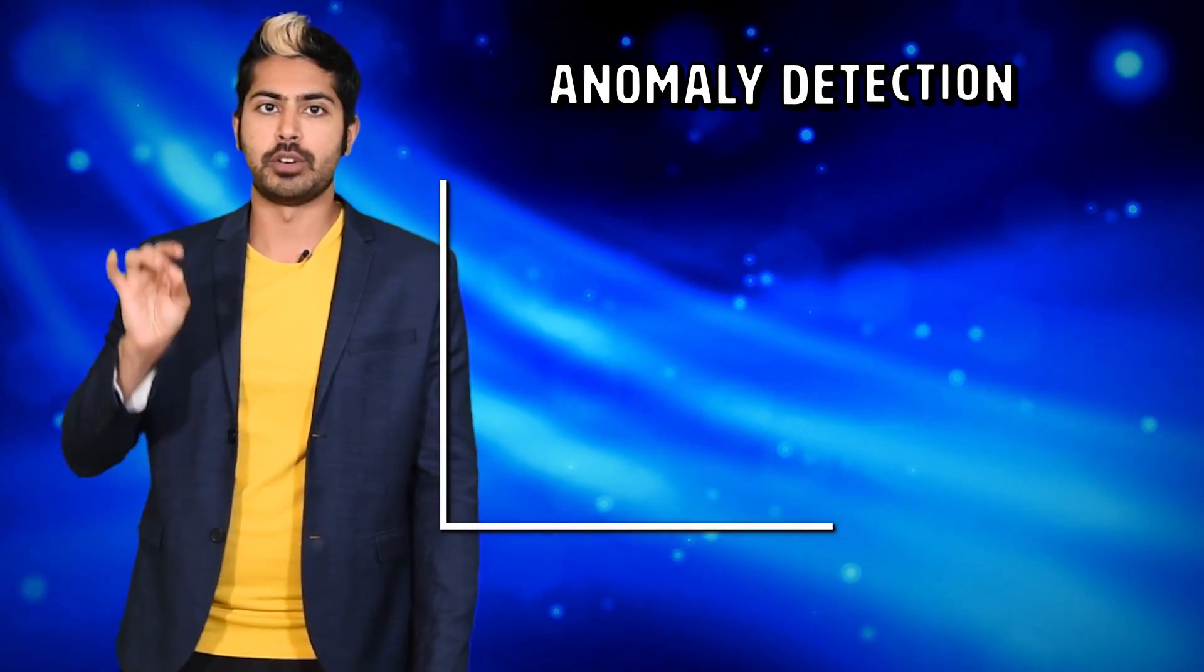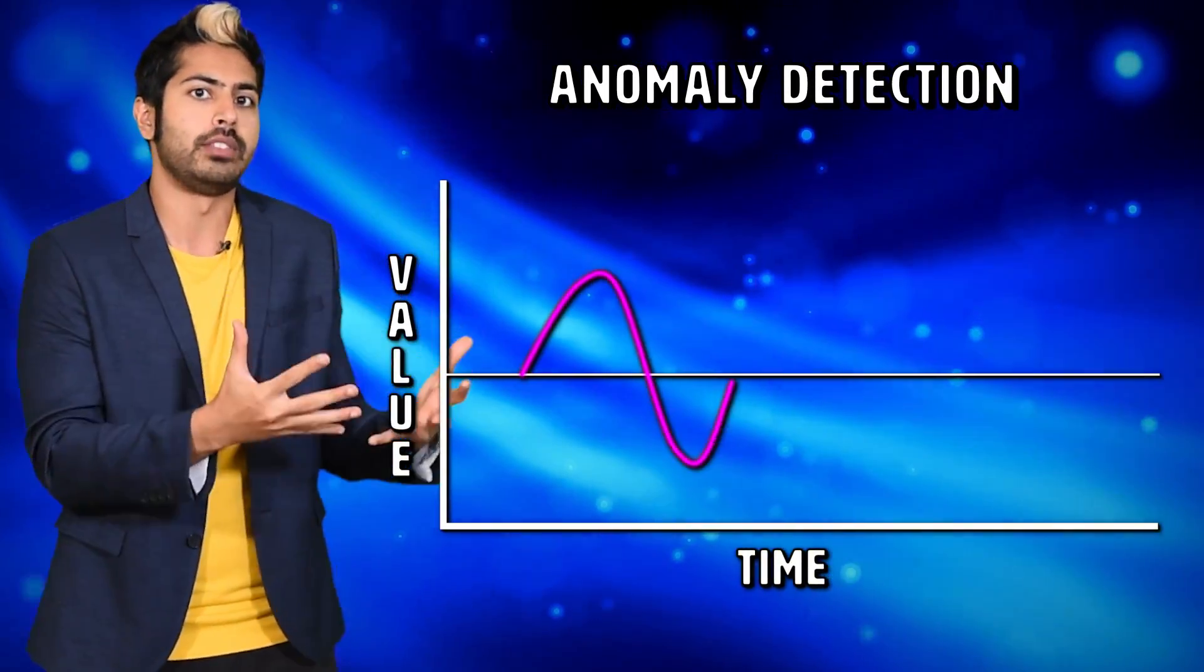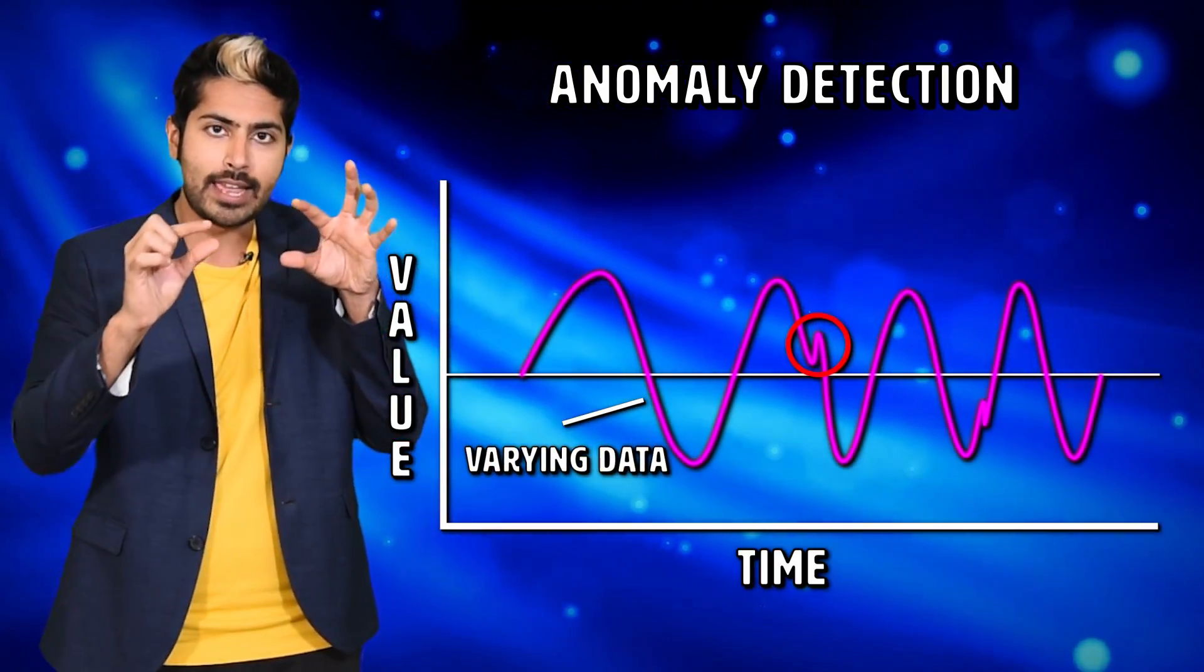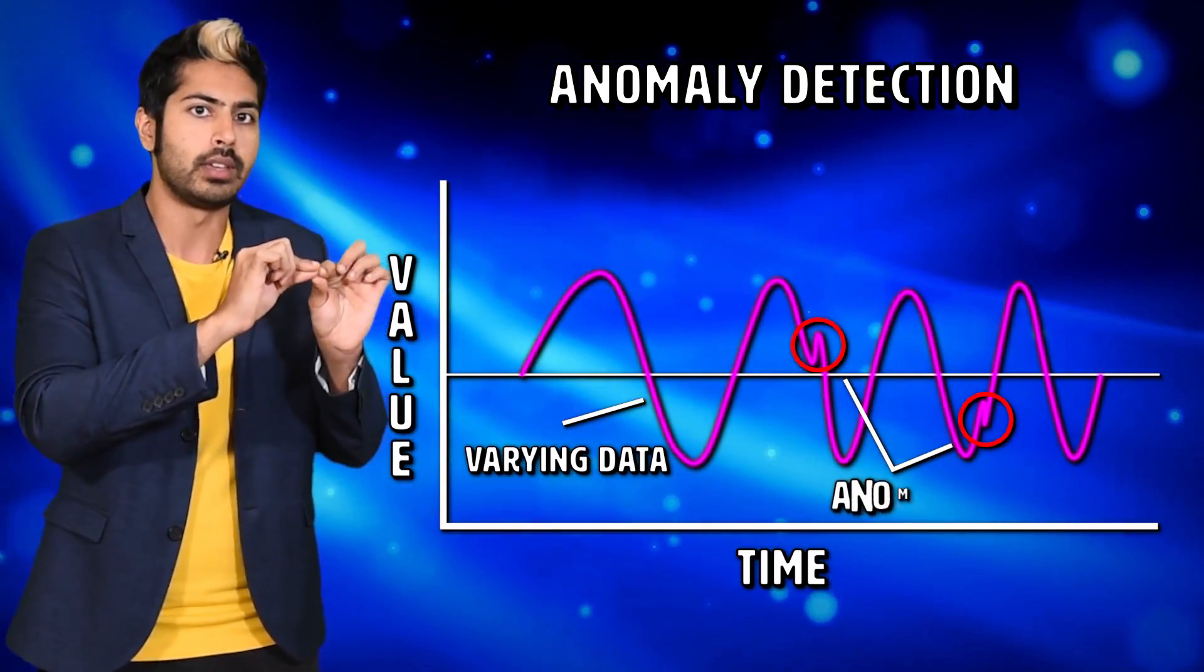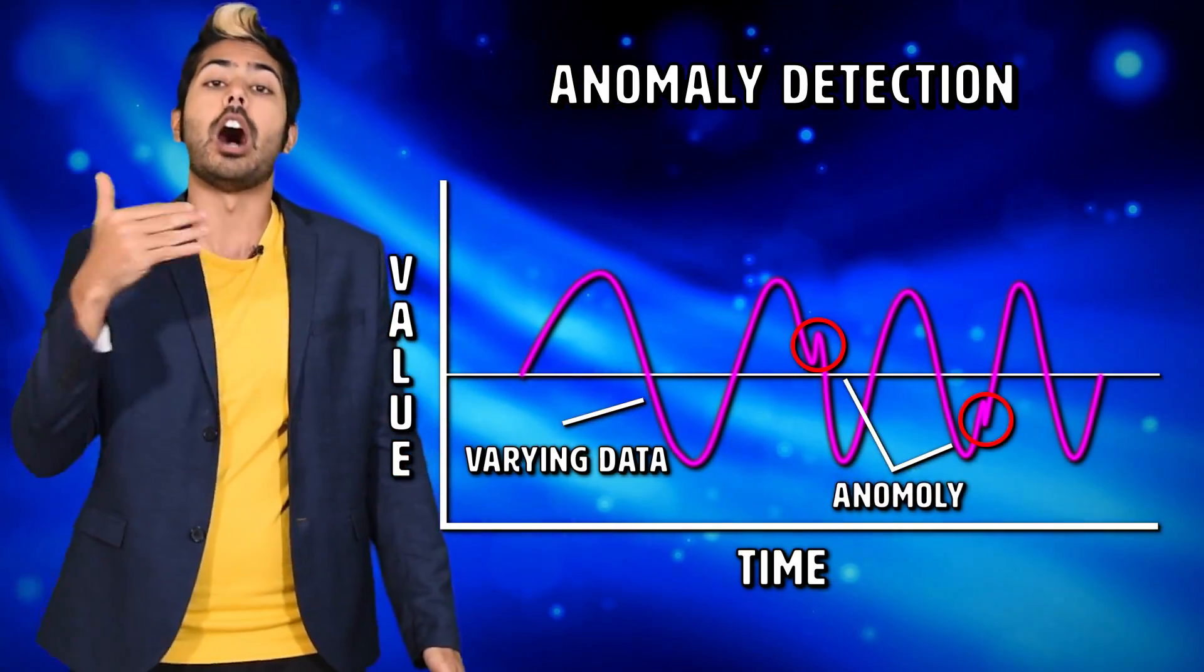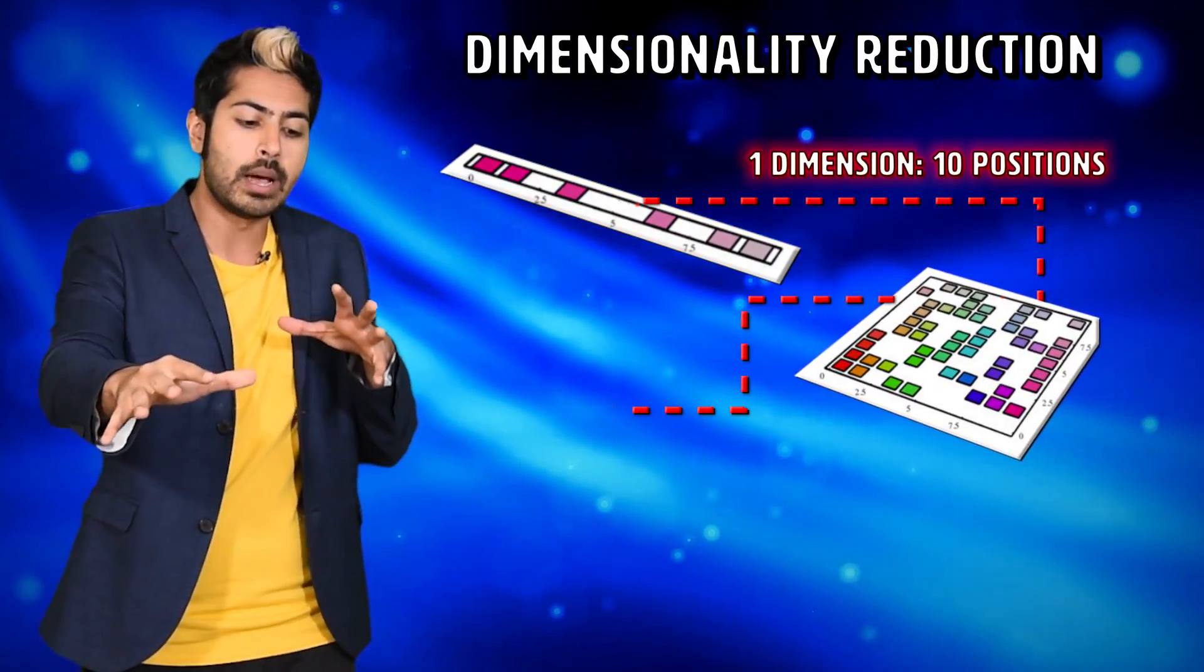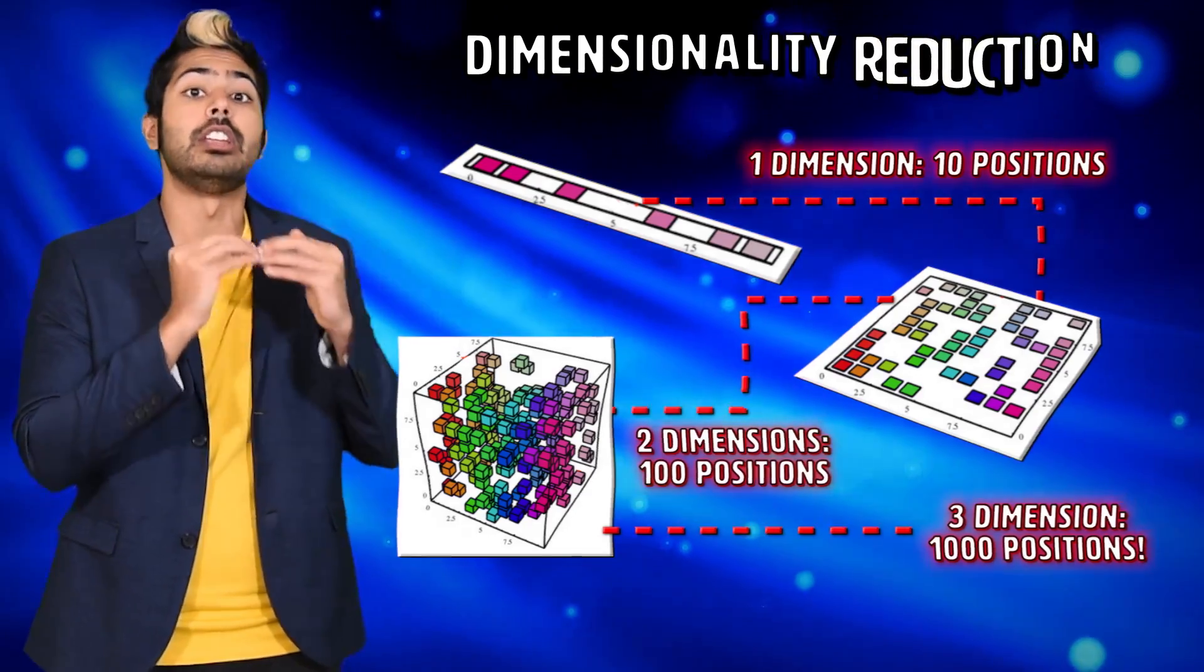Anomaly detection finds the outliers in a collection of data points. Banks use this to find fraudulent transactions. Association finds correlated features between data points, then lets us infer other features of a given data point. Airbnb uses this to recommend other listings you'd probably like. And dimensionality reduction reduces the number of features in a dataset, which makes it easier to visualize and interpret.